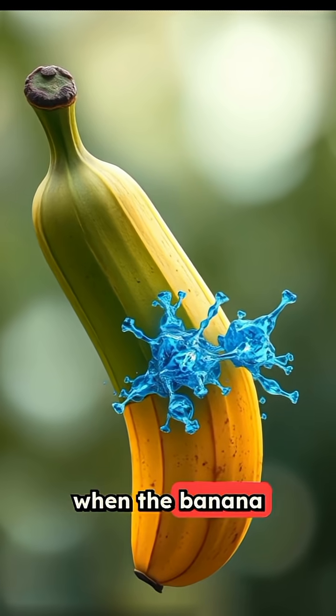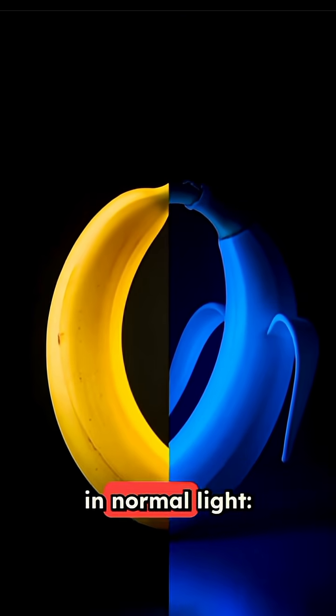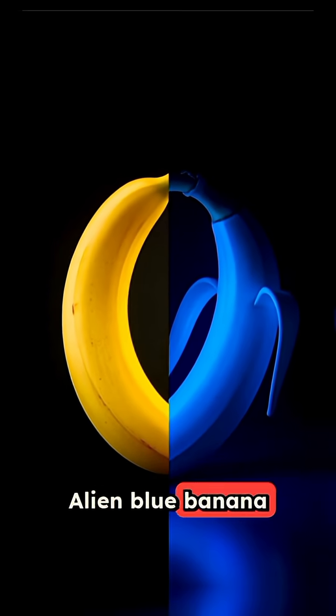These are created when the banana starts breaking down the green chlorophyll as it ripens. So in normal light, yellow. Under UV light, alien blue banana vibes.